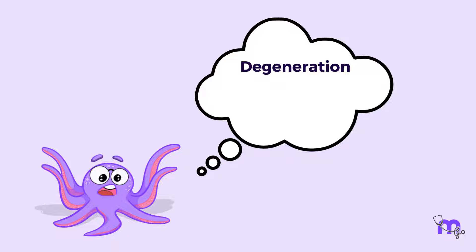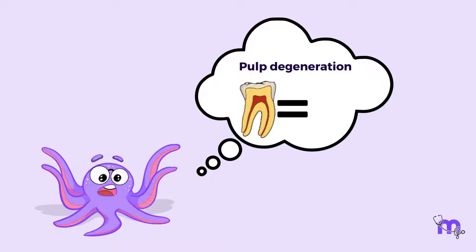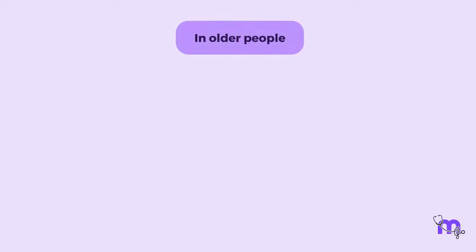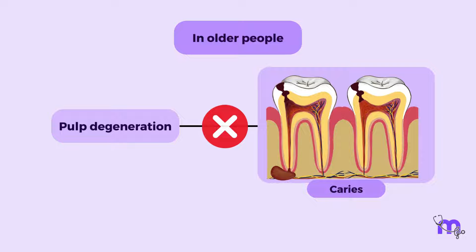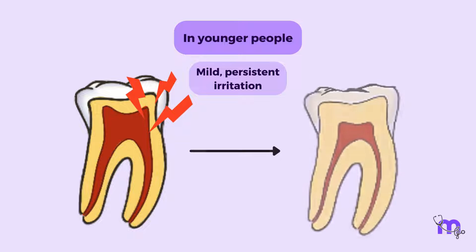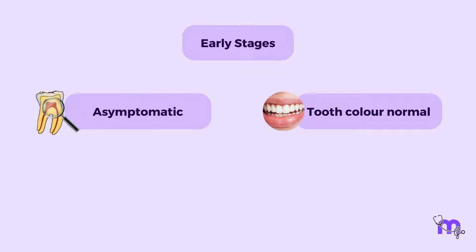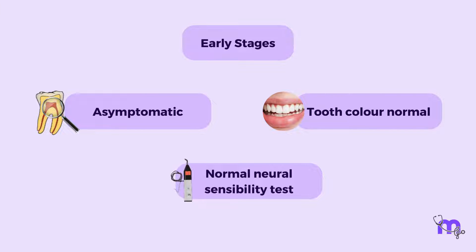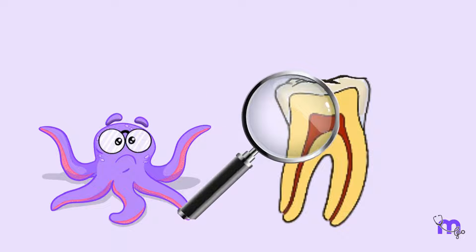So, what do we mean by Degeneration? We have heard this term most often in relation to old age. In this case too, pulp degeneration is commonly observed in older patients, but that does not mean it doesn't affect younger people. In older people, causes don't necessarily have to be related to infection or caries, whereas in younger people, it can be due to the mild but persistent irritation of the pulp. In the early stages, it is asymptomatic — the tooth doesn't show discoloration and the pulp may react normally to the neural sensibility tests. So, how do we recognize pulp degeneration? Let's dive deeper to answer this question.